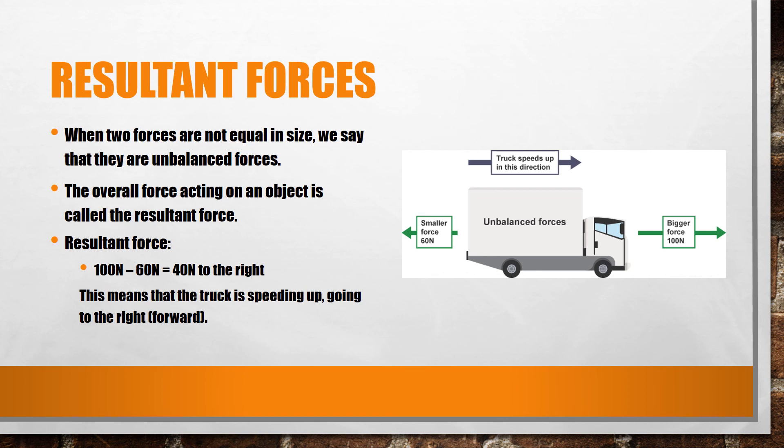If we look at the image of the truck, we see that there is a force of 100 Newtons pulling it to the right, and 60 Newtons pulling it to the left. To figure out the resultant force, we find the difference between the forces pulling in opposite directions. In this case, we would have 100 Newtons take away 60 Newtons. This gives us 40 Newtons. This 40 Newtons will be pulling the truck in the direction of the bigger force. In this case, it would be to the right. This means that the truck is speeding up towards the right.